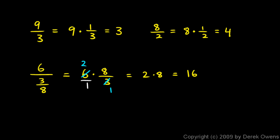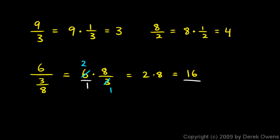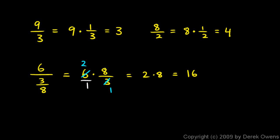Again, it's not immediately obvious that 6 divided by 3 eighths works out to 16. But if we remember that dividing by a fraction is the same as multiplying by the reciprocal of that fraction, this problem becomes a lot easier to deal with.